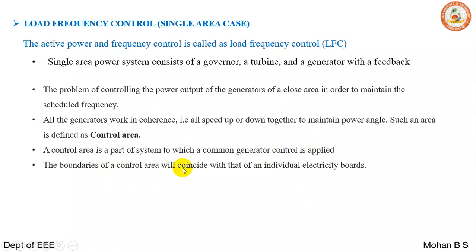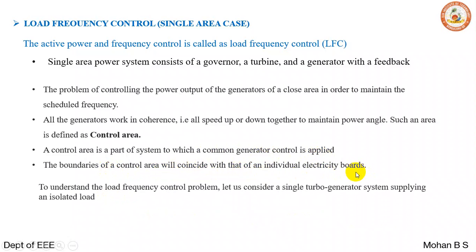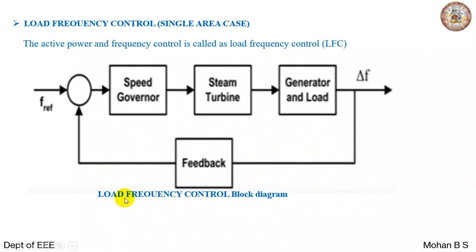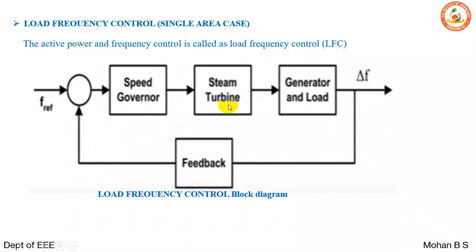The control area is a part of a system to which common generation control is applied. The boundaries of the control area coincide with that of an individual electricity board. To understand the load frequency control problem, let us consider a single turbine-generator system supplying an isolated load. This is the load frequency control block diagram, where we have a speed governor with input being the reference frequency, and turbine-generator load output frequency being checked and fed back to regulate.